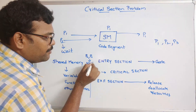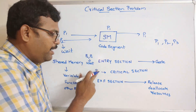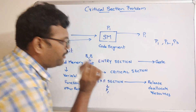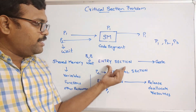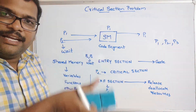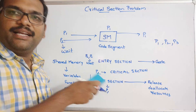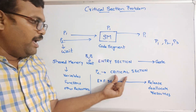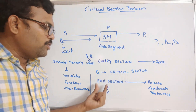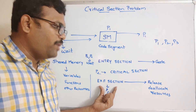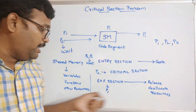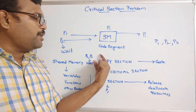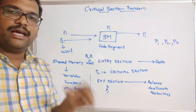P2 and P3 will be in a waiting section. Once P1 gets to the exit, P2 will enter the critical section. The entry section is used to stop other processes from entering the critical section until it becomes free. Whenever a process completes its execution in the critical section, it comes to the exit section, where all the resources and shared memory are released. Then only the next process will be allowed to enter the critical section.